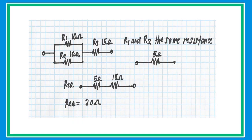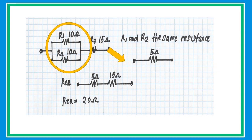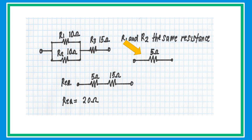Here is another example. R1 is 10 ohms, R2 is 10 ohms, and R3 is 15 ohms. Notice that two resistors are connected in parallel — simply get half of their value to get an equivalent resistance of 5 ohms. Redraw and simplify the circuit, then add R3 (15 ohms) to get a total equivalent resistance of 20 ohms.